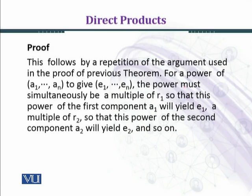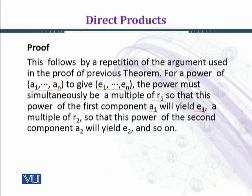This follows by a repetition of the argument used in the proof of the previous theorem. For a power of (a1, ..., an) to give (e1, ..., en), the identity element in the direct product, the power must simultaneously be a multiple of r1 so that the first component a1 yields e1, a multiple of r2 so that a2 yields e2, and so on. In this manner we have proved that the order of the element (a1, ..., an) is the least common multiple of their orders r1, ..., rn.